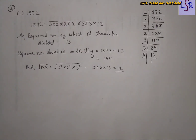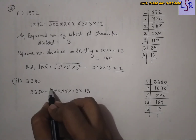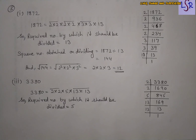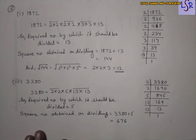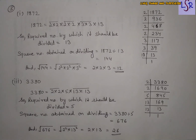Let's do one more of this type: 3380. We find the prime factorization, write in the form of products, and make pairs. We notice that 5 is left unpaired, so the required divisor is 5. The square number obtained on dividing is 676. Finding the square root of 676: we write 2² × 13², remove the squares and the root, getting 2 × 13 = 26. That's all for this video — we'll continue with further questions in the next video.